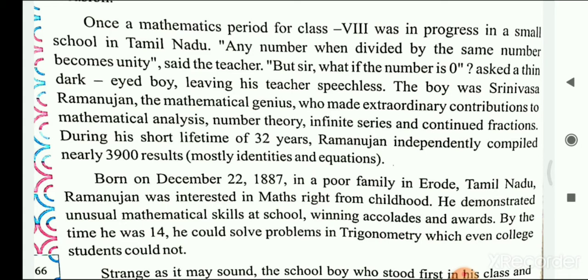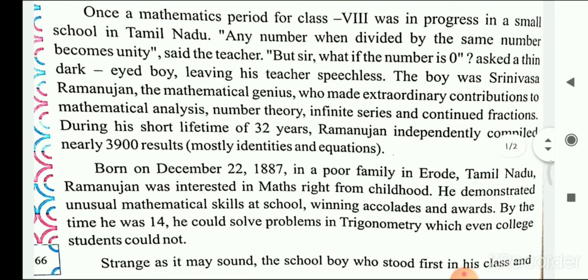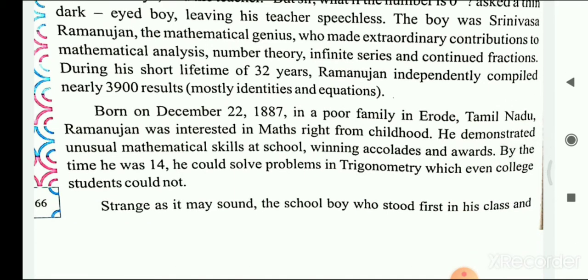During his short lifetime of 32 years, Ramanujan independently compiled nearly 3,900 results, mostly identities and equations. The teacher told students that any number divided by the same number becomes unity, that is 1. Young Ramanujan raised the question: what if the number is zero? The teacher was left speechless. Ramanujan lived for a very short time of 32 years, but gave nearly 3,900 results, mostly identities and equations.